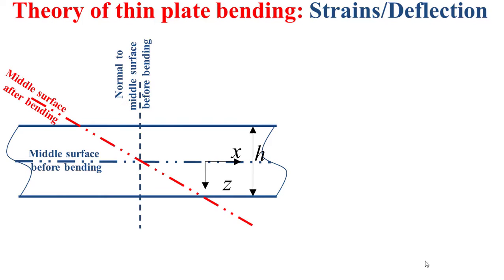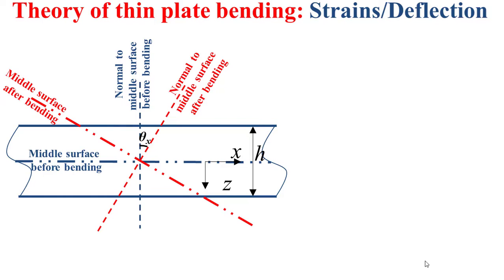The middle surface after bending and the normal to the middle surface after bending are depicted here in red. The angle between the normal to the middle surface before and after bending is denoted by theta x. This theta x is the slope along the x direction, and the slope theta y along the y direction can be determined similarly.